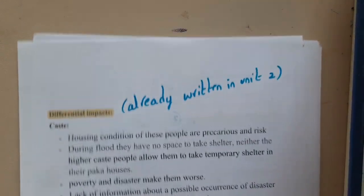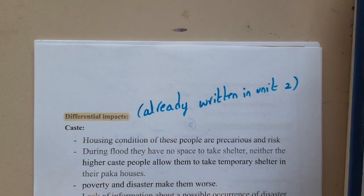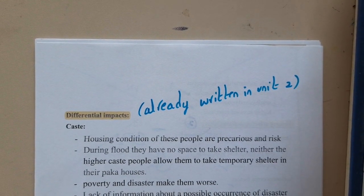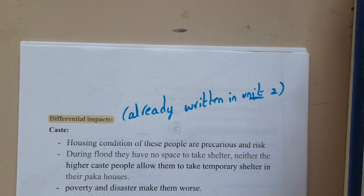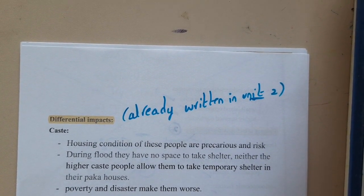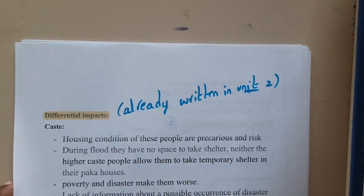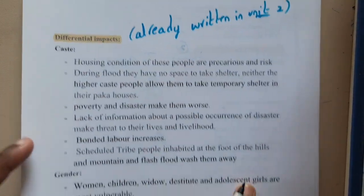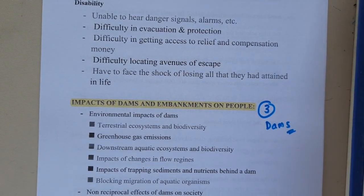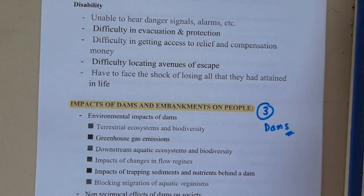In the next lecture we should discuss impacts, but the impacts of a disaster were already covered in our previous lectures in Unit 2. You can refer back to those. In that unit we discussed caste, gender, age, location, and disability as key topics related to disaster impacts.